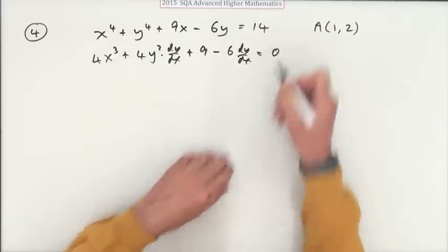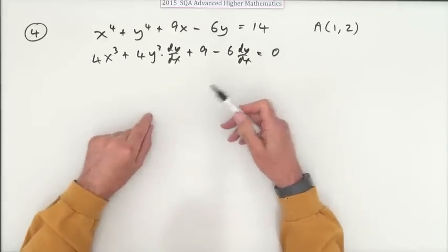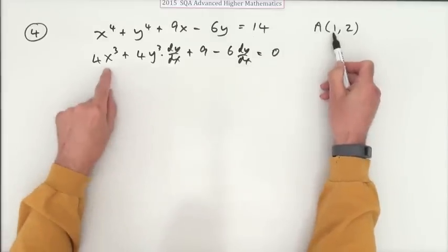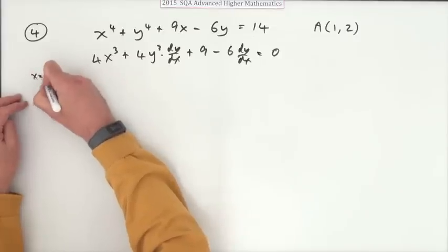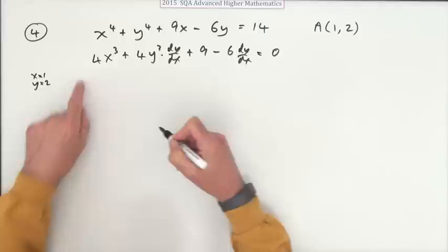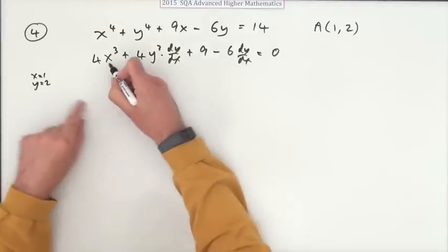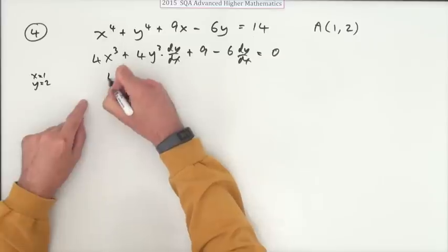And that equals zero. There's no need to tidy up because I'm going to work out. So if I put 1 for x and 2 for y, I'll just put a wee note to the side: x equals 1, y equals 2, to explain why it's all going to turn into numbers. So that's 4 times 1 would just be 4.